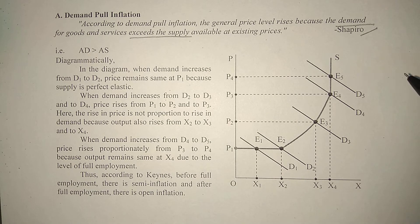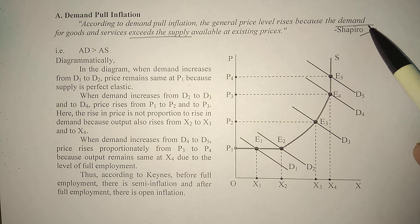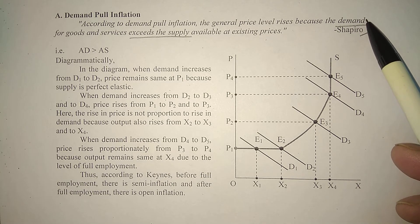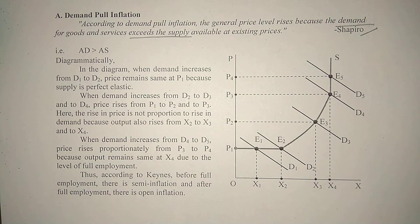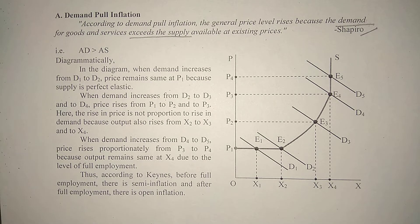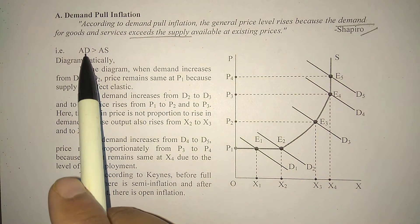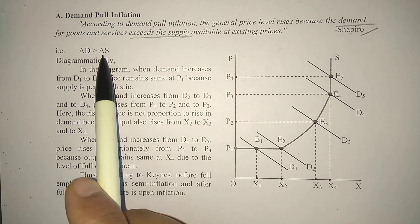Shapiro's definition is very simple. According to Shapiro, the main reason for demand-pull inflation is the excess of demand over supply. If demand in the market is more than the available supply, price will rise — that will be called demand-pull inflation. Or you can say: aggregate demand greater than aggregate supply.